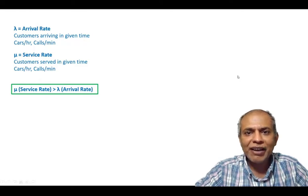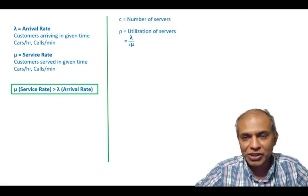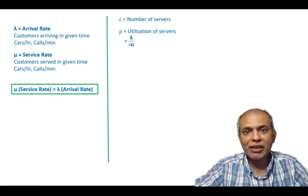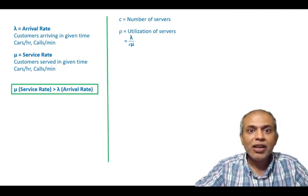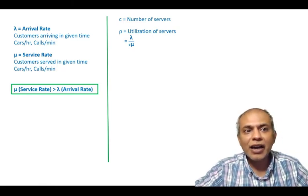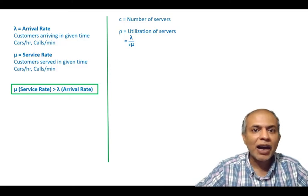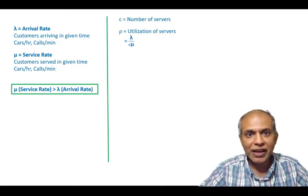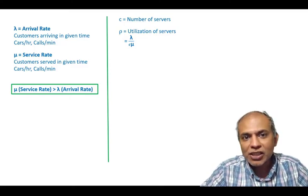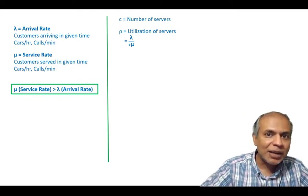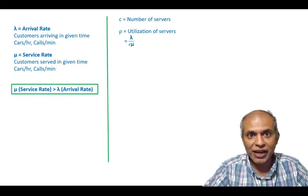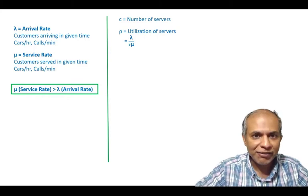So what we have is the utilization, an important metric that we need to design our systems for, depends on the arrival rate divided by the total service rate. And the total service rate is the service rate times the number of servers. So that's a very simple formula that we have.